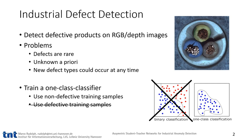Here you only have access to one of the classes in training, which is in our case the class of non-defective products. In testing, the classificator should decide whether a given sample is member of this class.